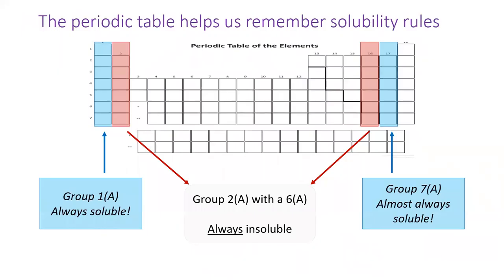If you're someone who likes to visualize things on the periodic table, please note that the alkali metals in group 1 are always soluble. The halides in group 7 are almost always soluble. Also, mixtures of group 2 and group 6 are always insoluble because the ions have large charges. A 2 plus ion and a 2 minus ion are hopelessly attracted to each other.